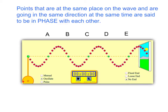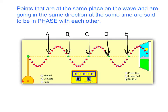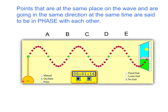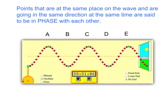Another important aspect of waves has to do with the particles that make up the medium and their relationships with each other — the idea of phase. Points at the same place on the wave going in the same direction at the same time are in phase. I've selected five green points here, labeled A, B, C, D, and E, all aligned on the line of equilibrium. We want to watch what happens to these particles as the wave goes by.